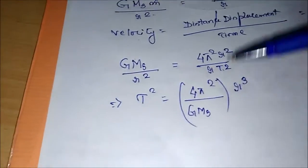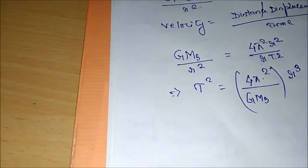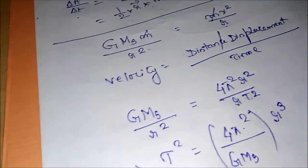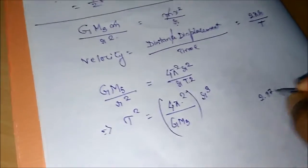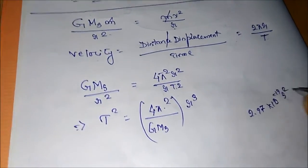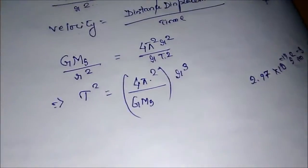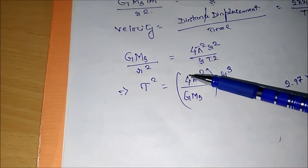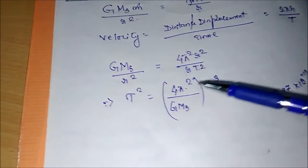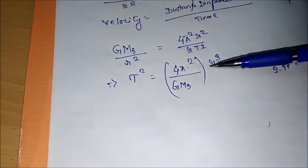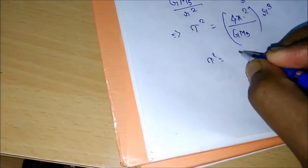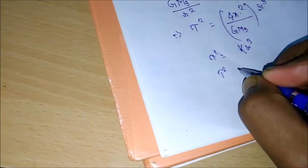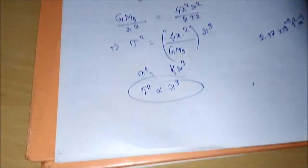Kepler's constant has the value 2.97 × 10⁻¹⁹ second squared per meter cubed. This value is obtained by putting in the values of π, G, and Ms — the mass of our Sun. We can use this to calculate the mass of any planet with any sun in a given solar system. So T² = k × R³, or T² is directly proportional to R³. This is Kepler's third law.